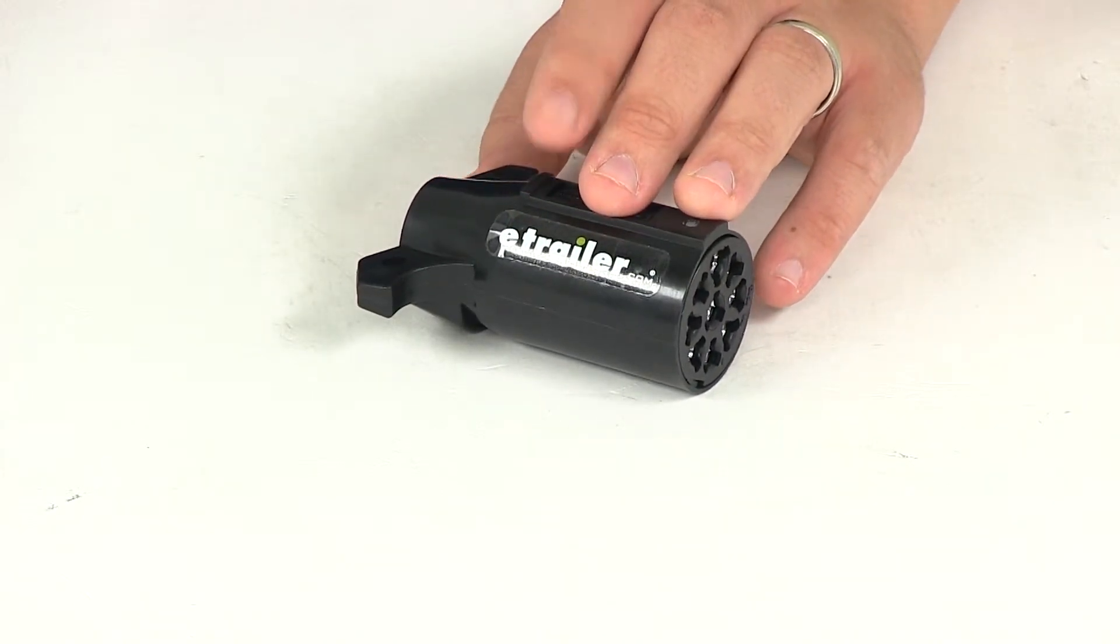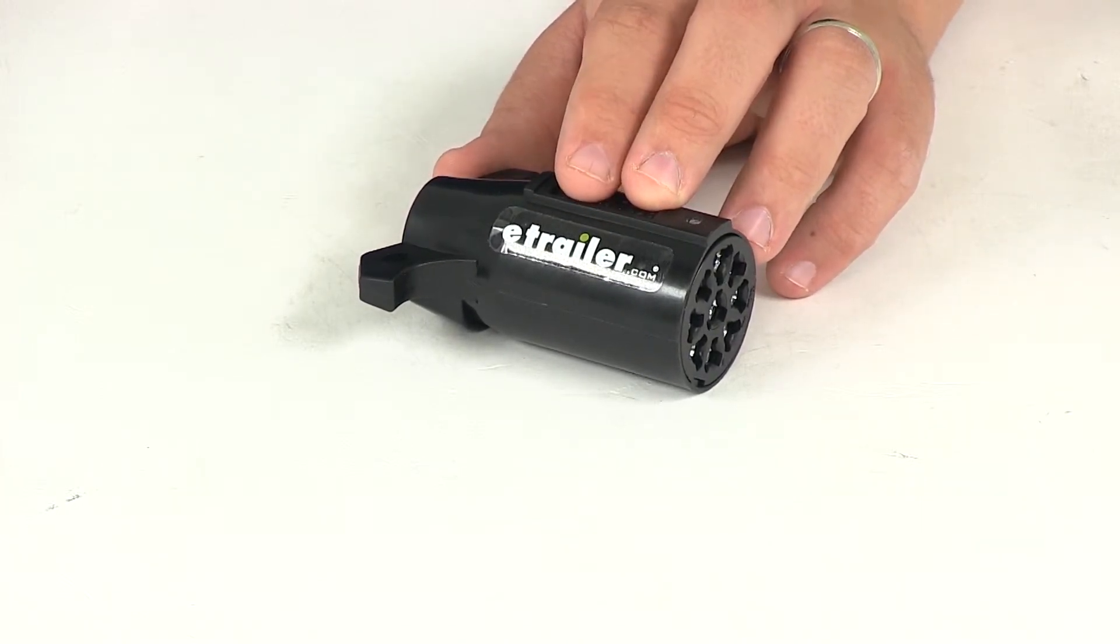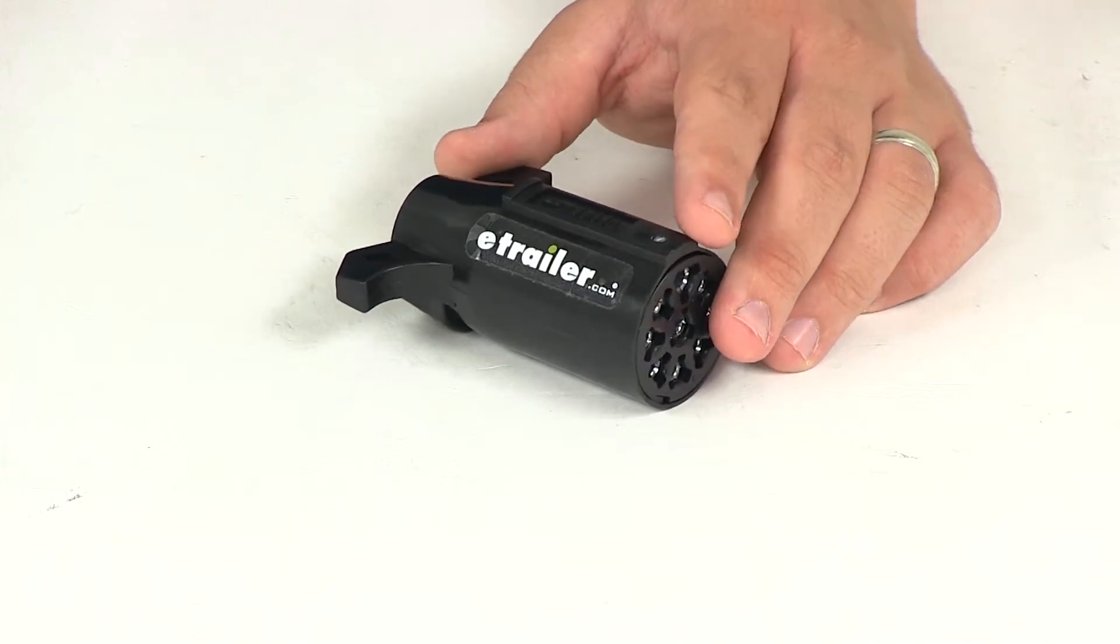When it comes to the yellow, that again is for backup, auxiliary ground or circuit, and we recommend 14-gauge.